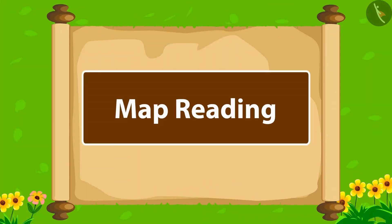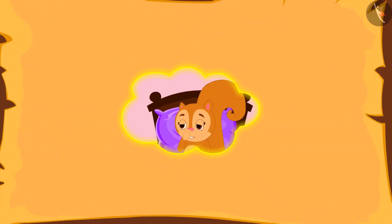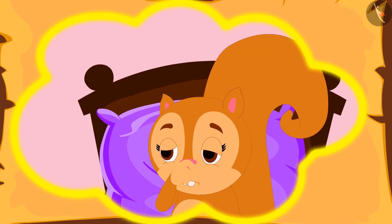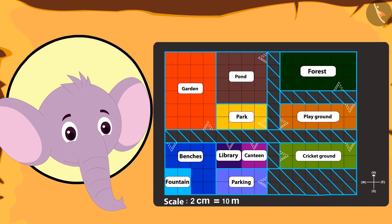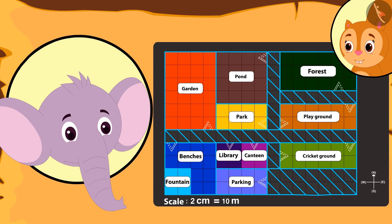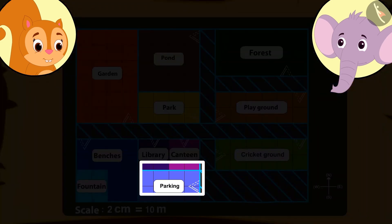Kids, in this video today we will learn more about reading a map. Everyone from school went on a trip, but being sick, Chanda could not go. While returning, Appu brings Chanda a map of that place. He wanted to tell Chanda about what he saw there. Appu goes to Chanda's house and shows her the map. He told her that first the bus stopped at the parking.